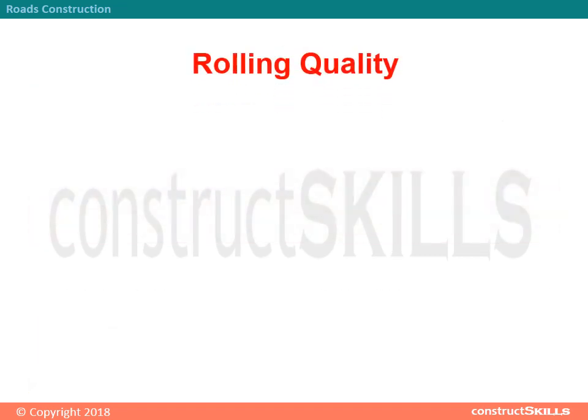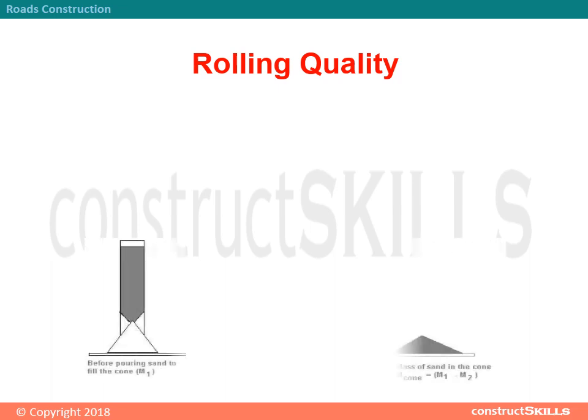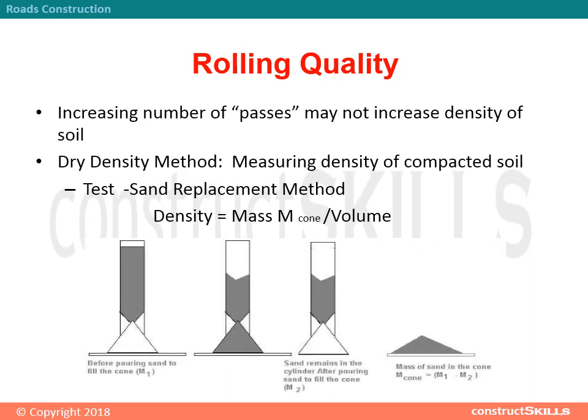Quality of Rolling: Increasing the number of passes may not increase the density of soil. The dry density method involves measuring the density of compacted soil using tests and the replacement method, where density equals mass divided by volume.